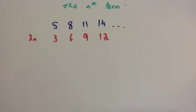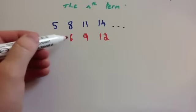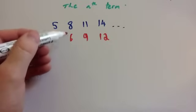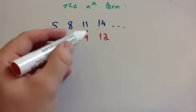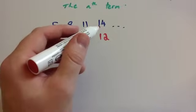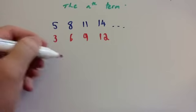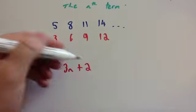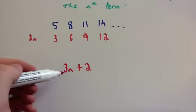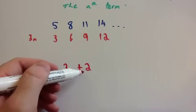Now, what you need to do is consider what you do to 3 to get to 5, what you do to 6 to get to 8, what you do to 9 to get to 11, what you do to 12 to get to 14. You add 2 each time. So the nth term is 3n plus 2 — in other words, it's the 3 times tables, but 2 bigger than it.